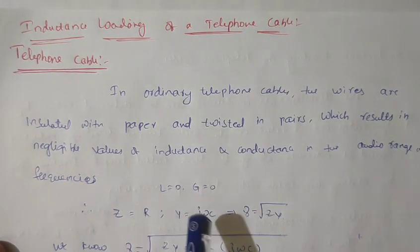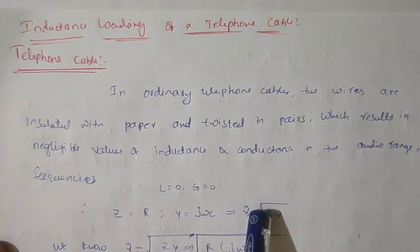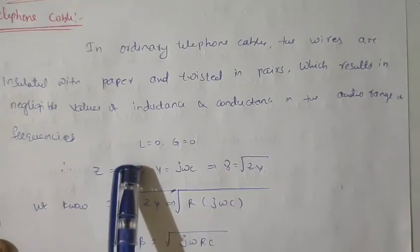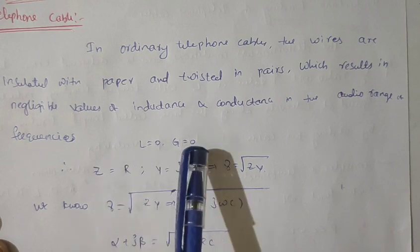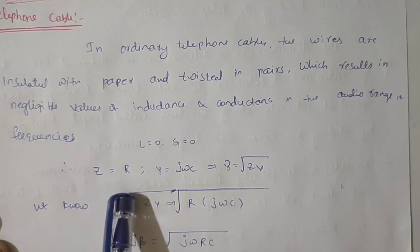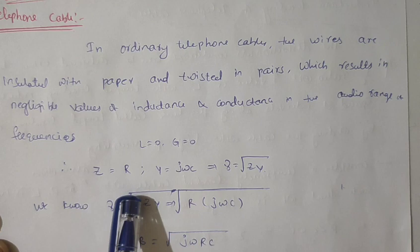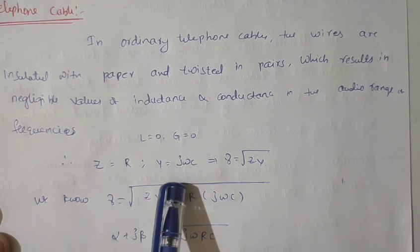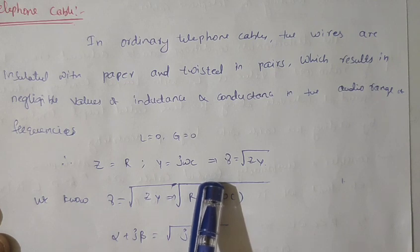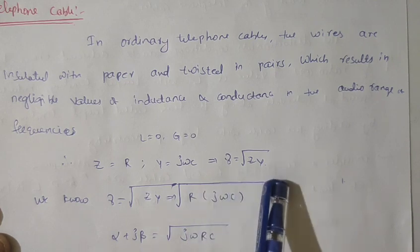First of all, we will see how the attenuation constants and phase constants are derived. For that purpose, I am considering negligible values of inductance and conductance. Therefore, the total series impedance becomes Z = R + jωL. Since L = 0, the series impedance is Z = R. And the shunt admittance is Y = G + jωC. Here, G value is 0, so therefore Y = jωC. Therefore, the total propagation constant Gamma = Z × Y.